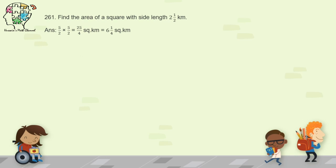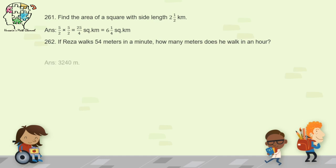Question 262: if Raja walks 54 meters in a minute, how many meters does he walk in an hour? Multiply 54 meters by 60 minutes to get 3,240 meters.